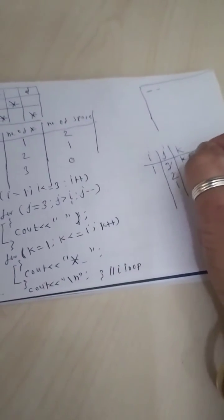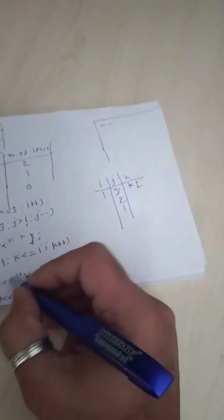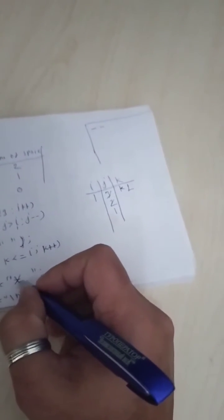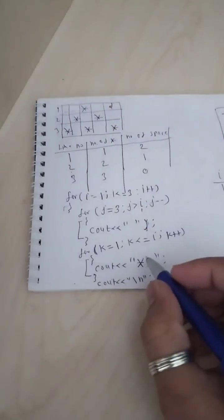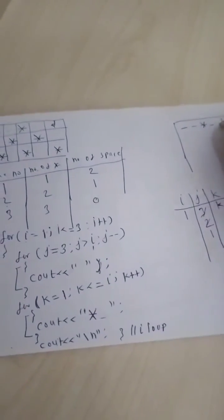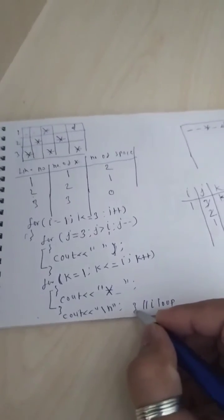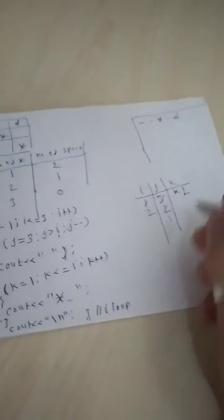Next, K equals to one, and i is also one, so the K loop executes only one time. One star and one space are printed. This loop ends. Next statement is cout slash n, so the end line is printed.